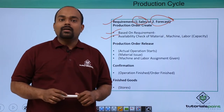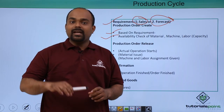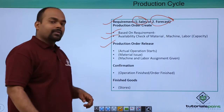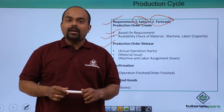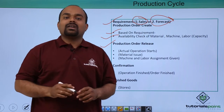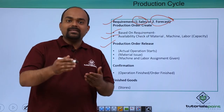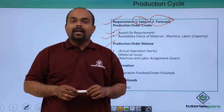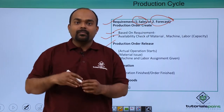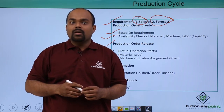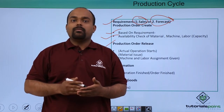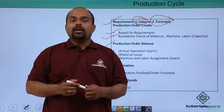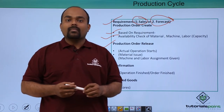After the production order is created, it moves to the next step: production order release. In production order release, the actual operation starts. The step-by-step operation for the particular product is finalized. First, the material is issued for production — whatever raw material is required for the particular finished product is issued under this production order release.